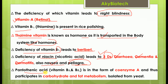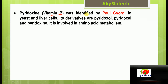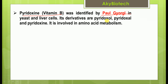Pantothenic acid, vitamins B3 and B5, exists in the form of coenzyme A and participates in carbohydrate and fat metabolism; it is isolated from yeast. Pyridoxin, vitamin B6, was identified by Paul Golgel in yeast and liver cells. Its derivatives are pyridoxal and pyridoxamine, and it is involved in amino acid metabolism.